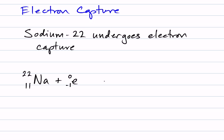Okay, so that's the first part of our equation. Then we draw our arrow. What does this produce if sodium undergoes electron capture? Well, this goes back to balancing nuclear equations. If we have 22 over here and 0 for the mass numbers, we should have a total of 22 on the right side.